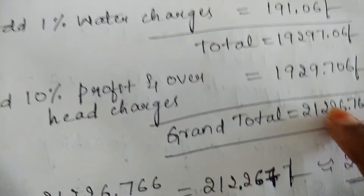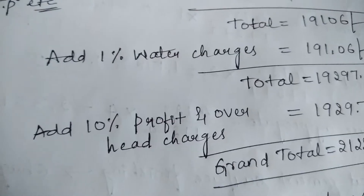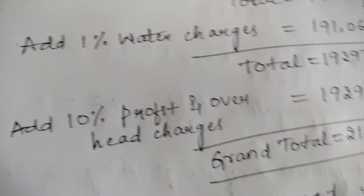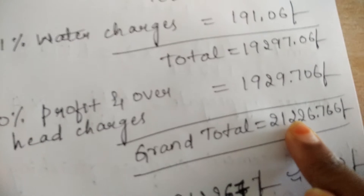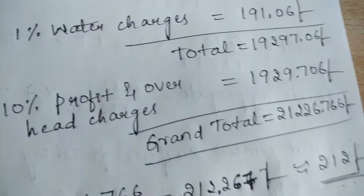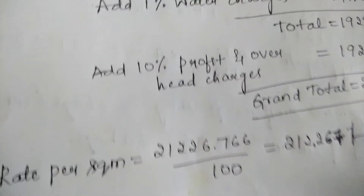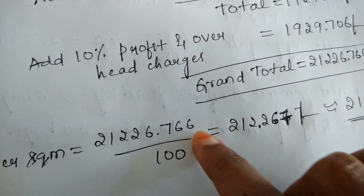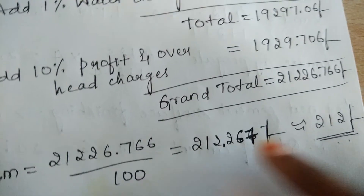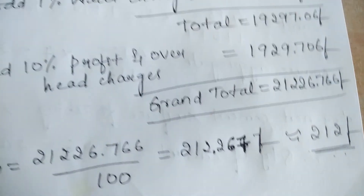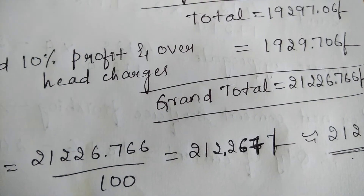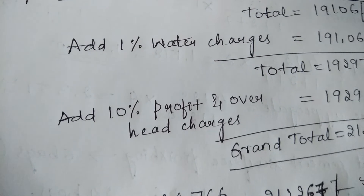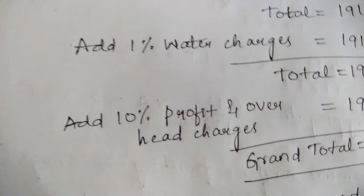This grand total represents the final amount for cement concrete flooring of 2.5 cm thickness including cement smooth finishing for an area of 100 m². The amount is for 100 m² of area. If we want to find the amount for 1 m², the rate per square meter is found by dividing 21,226.766 by 100, giving 212.267 — approximately ₹212 per m². So this completes the rate analysis for cement concrete flooring of 2.5 cm thick including smooth finish.